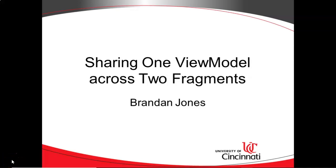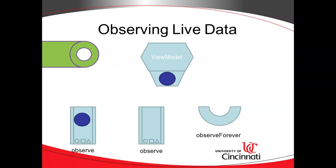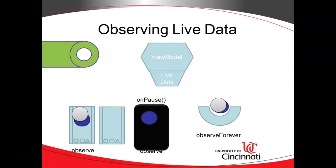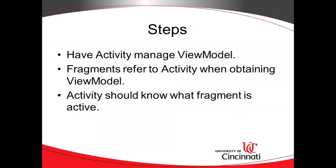In this video, we're going to see how to share one ViewModel across two fragments, and therefore also share the data from one ViewModel across two fragments. A nice thing about ViewModel and LiveData is that we get capabilities where we can have data that is observed by multiple parties. With the activity, we have essentially a container for our layout, and our layout in this case we're going to call a fragment. When we have one ViewModel shared across multiple fragments, the activity has the option to remove one fragment and replace it with another, but still refer to the same LiveData. To do this, we need to have the activity manage the ViewModel, not the fragment, and then the fragment refers to the activity when it's obtaining the ViewModel. The activity should also have some knowledge of which fragment is active at the moment.